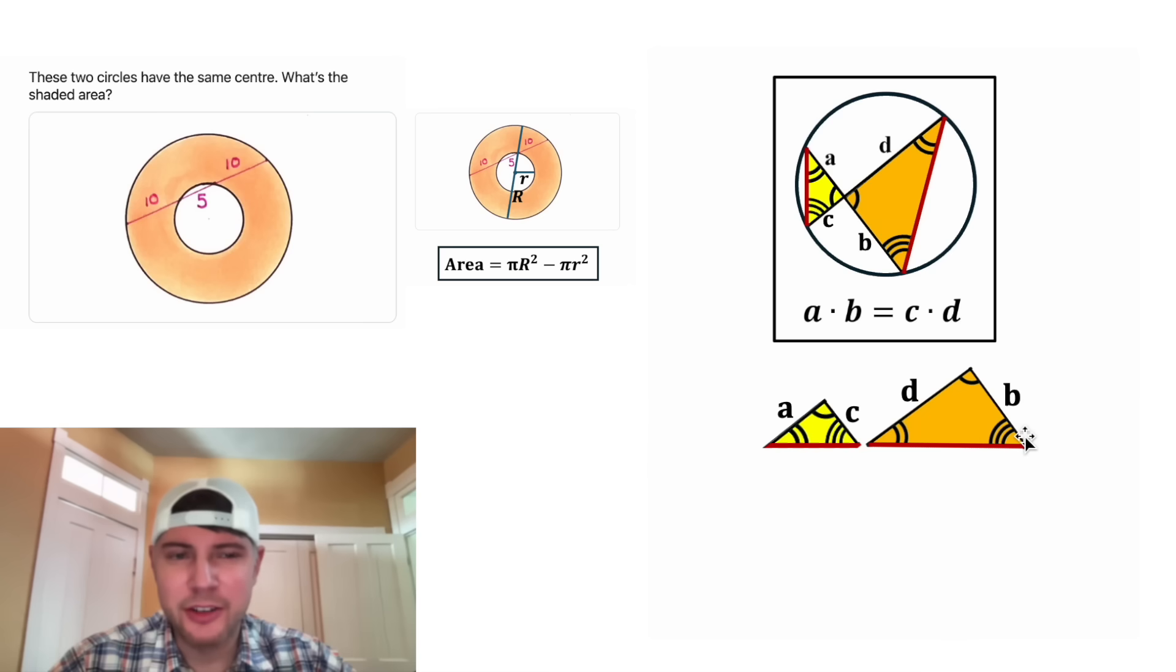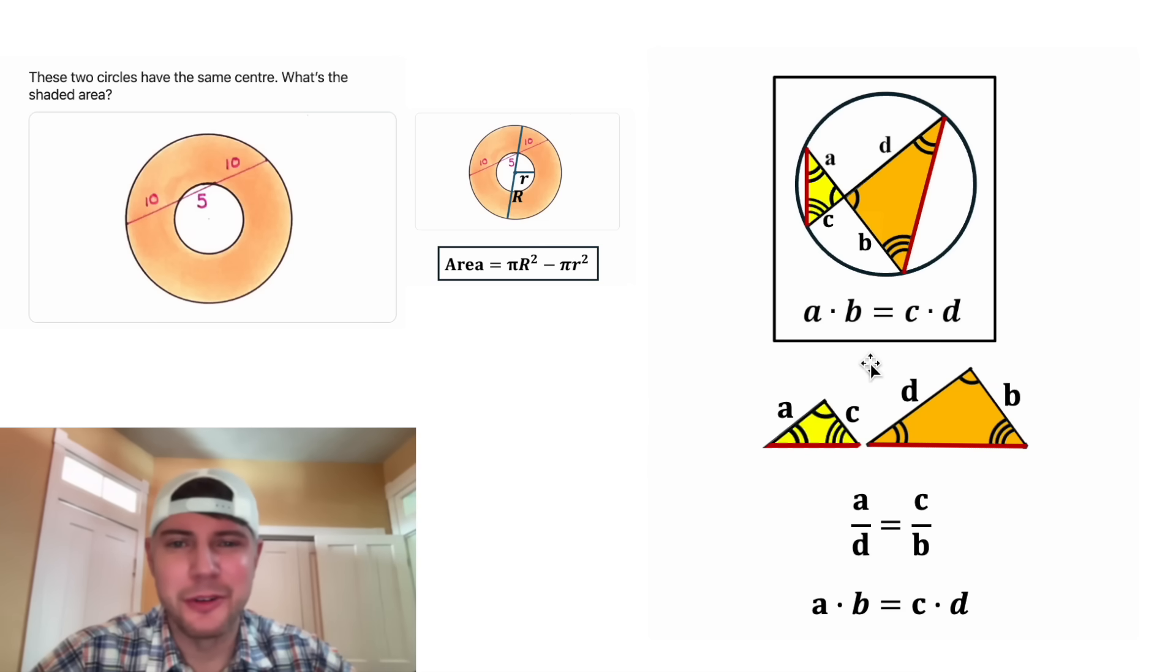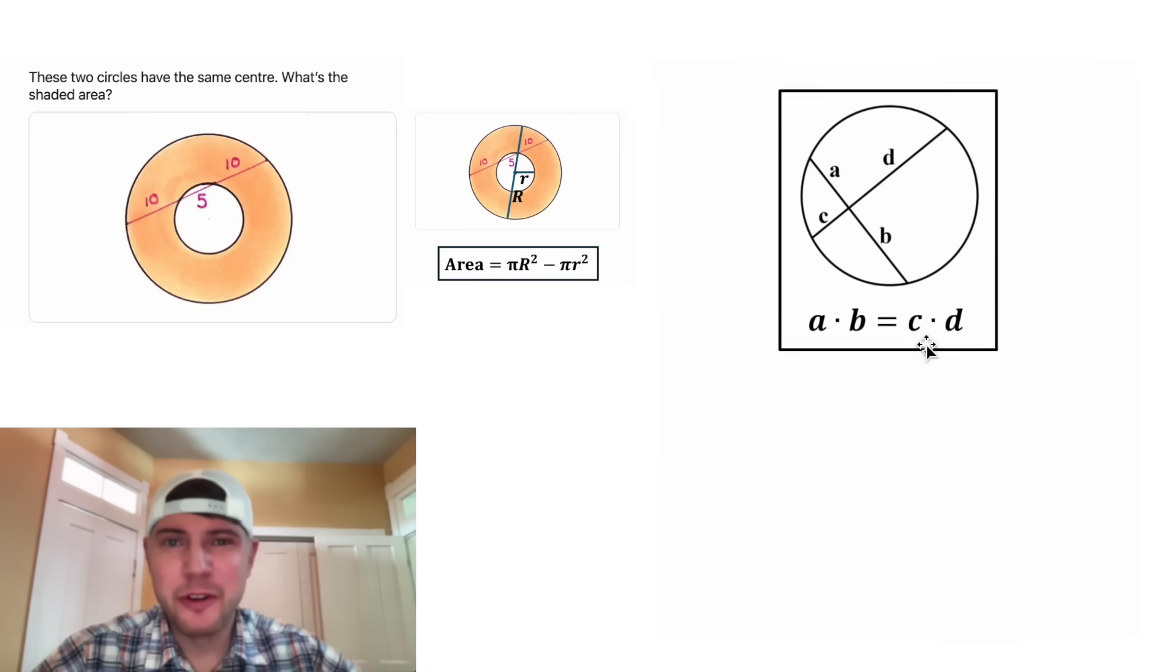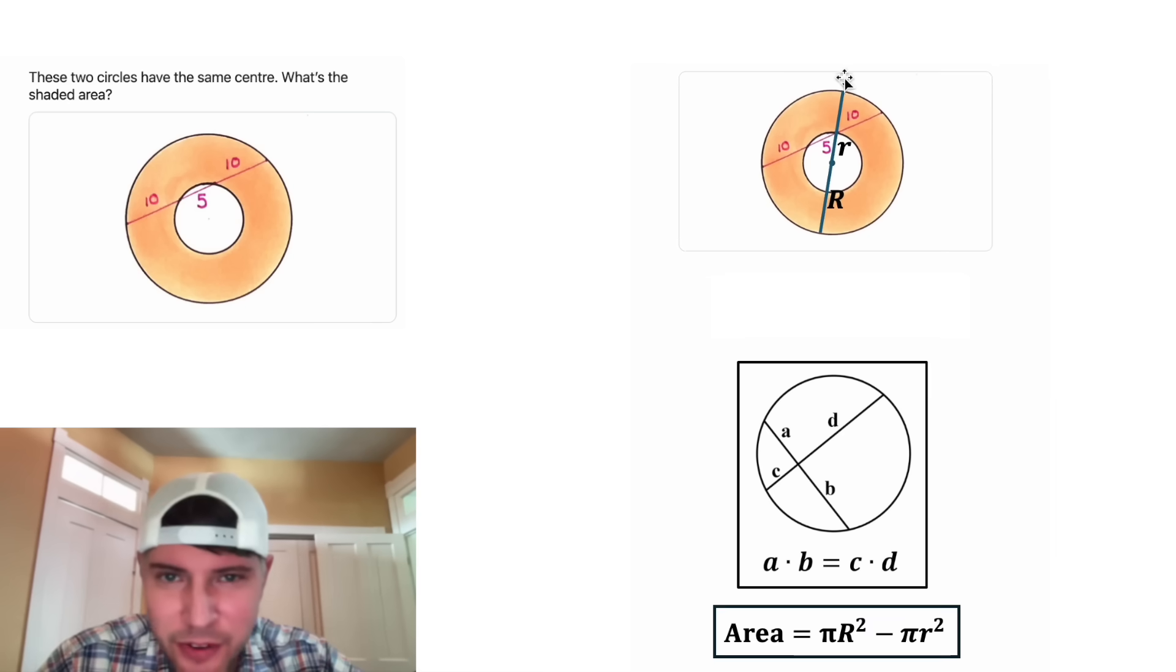Since these two triangles are similar, their sides will be proportional. So we have a over d equals c over b. And then from here we can cross multiply: a times b is equal to c times d. And a times b equals c times d is what we're trying to prove, so this is the proof of the intersecting chords theorem.